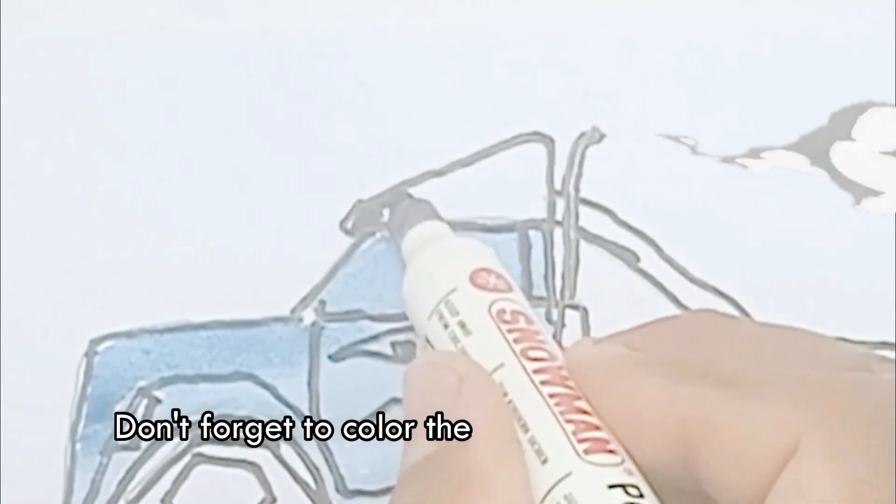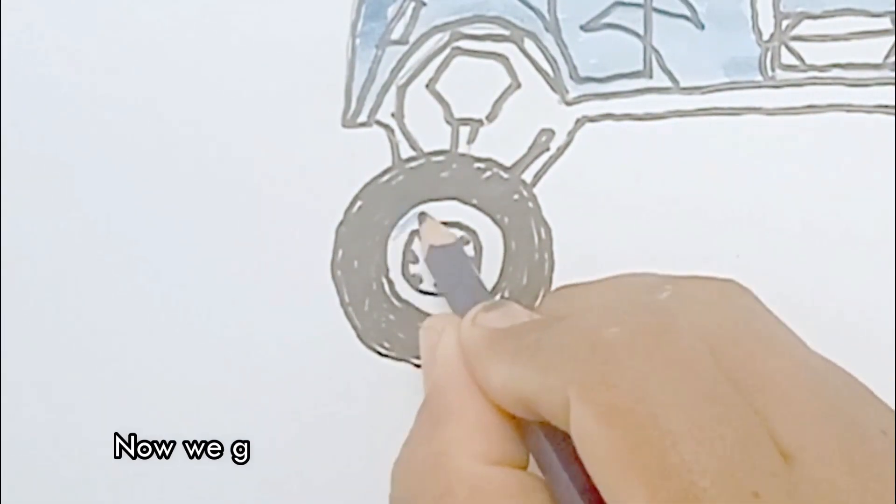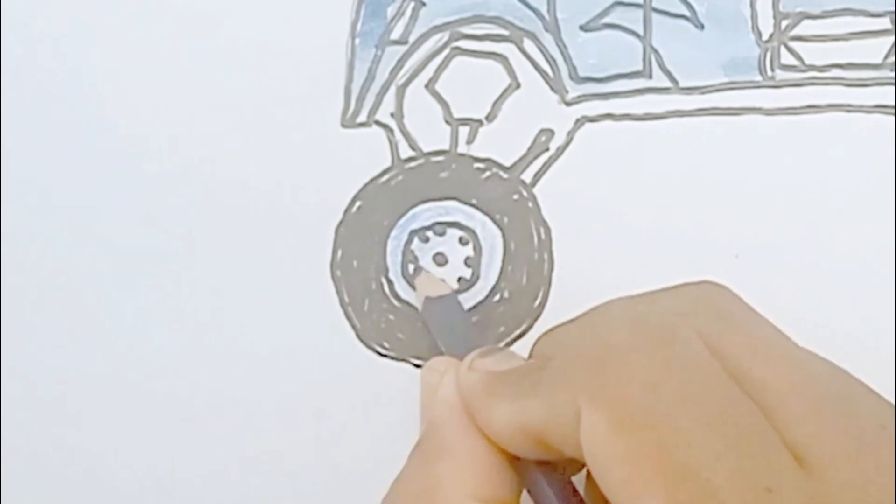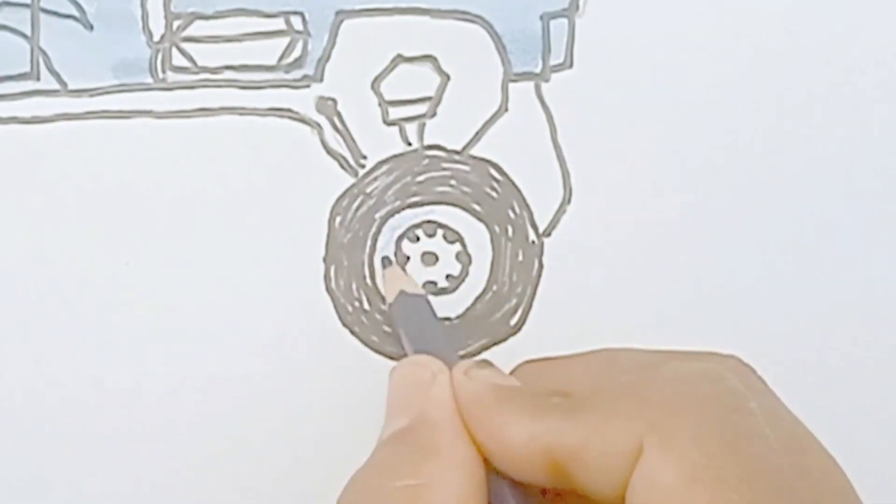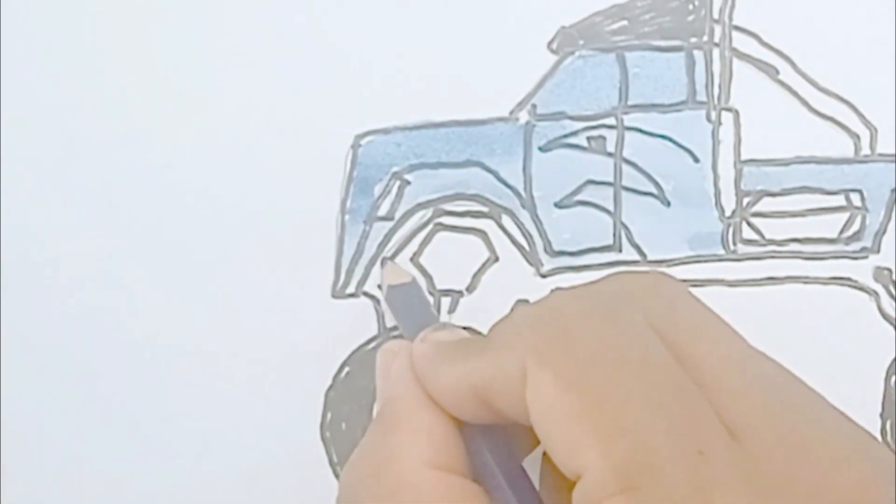Don't forget to color the top of the cabin black. Now we give light blue color to the rim and lower body. Let's give black color to the red and below.